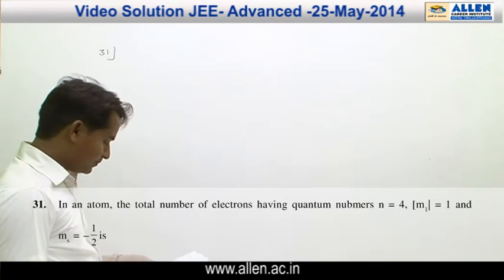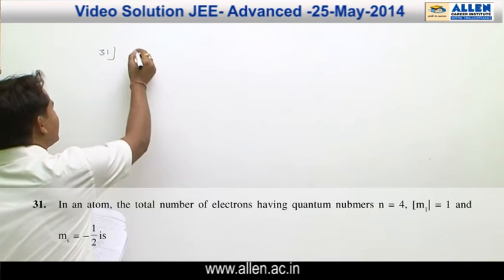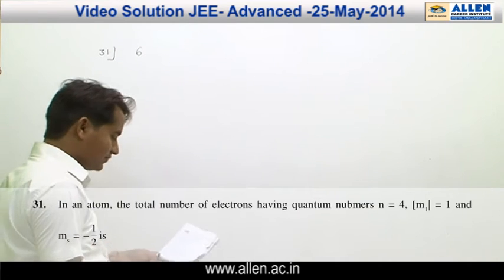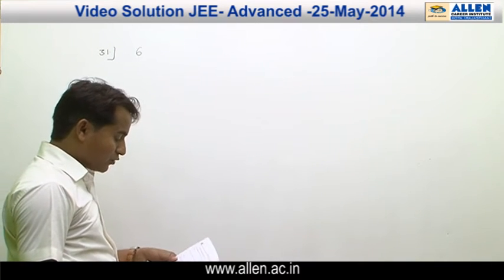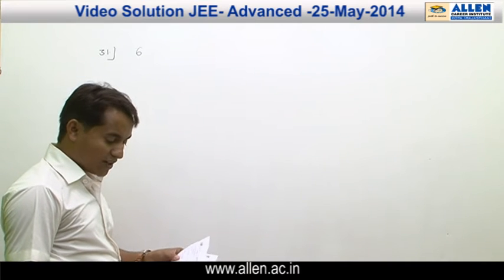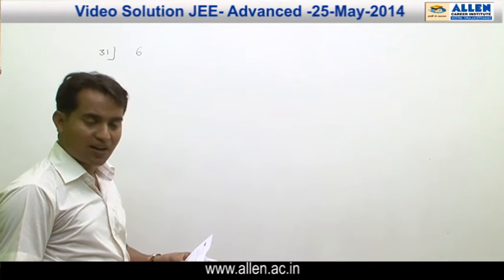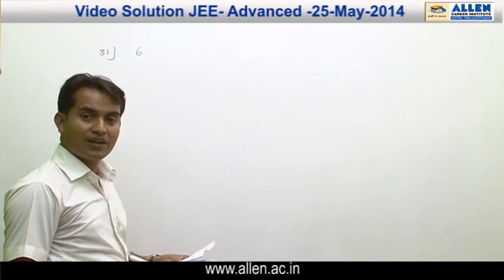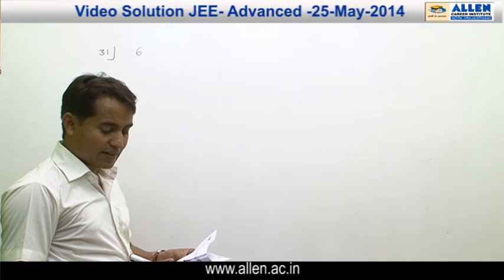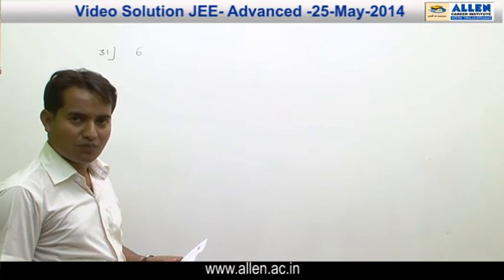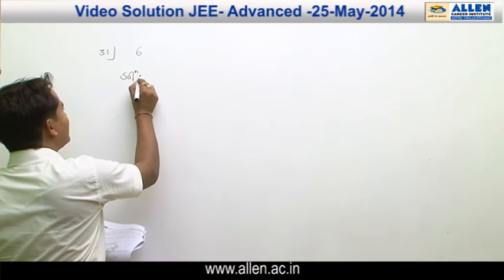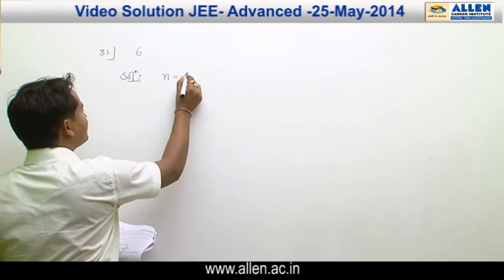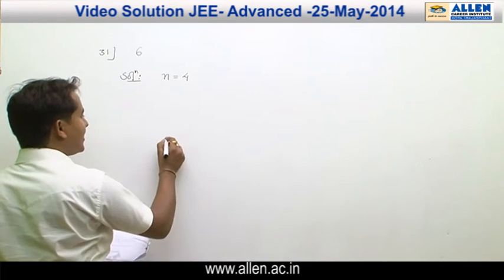Question 31, the answer is 6. In this question, we are going to calculate total number of electrons having quantum numbers n equal to 4, m equal to 1, and spin quantum number equal to minus half.